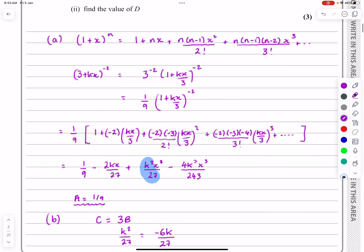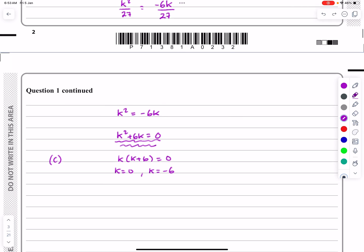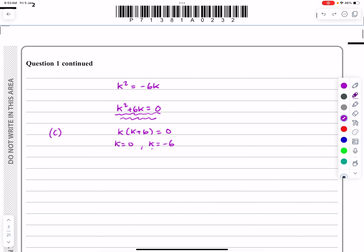Let's just go back and check within the context of this question. So it doesn't say anything about k being positive or negative, but you can't have k being equal to zero. If you have k being equal to zero up here, you get three to the minus two. It doesn't make sense within the context of our question. So k isn't equal to zero, which means k is equal to minus six.